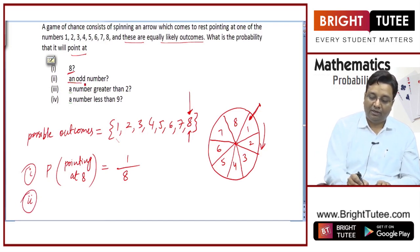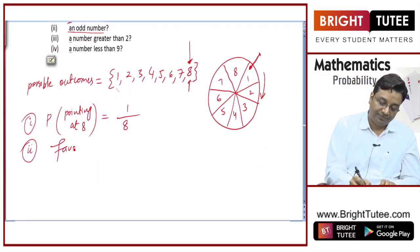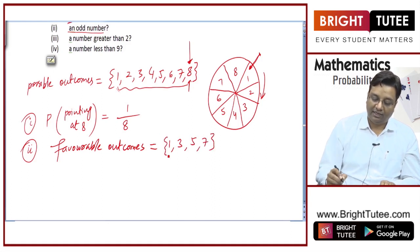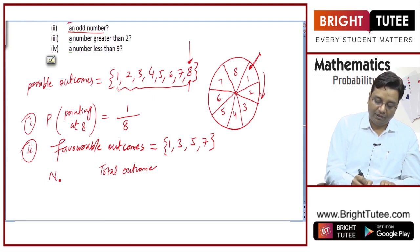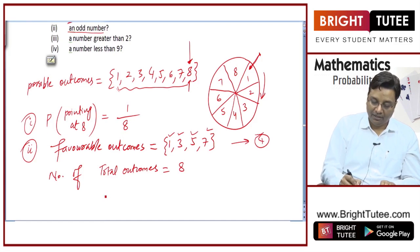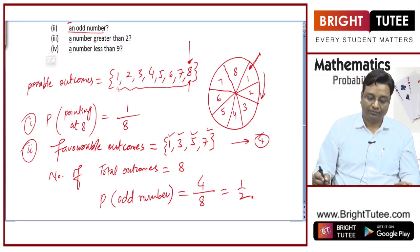What is the probability the arrow points at an odd number? The odd numbers are 1, 3, 5, and 7 — that gives 4 favorable outcomes out of 8 total. So the probability is 4/8, which equals 1/2.